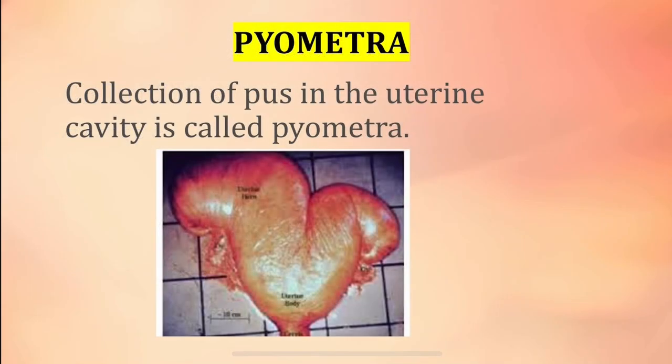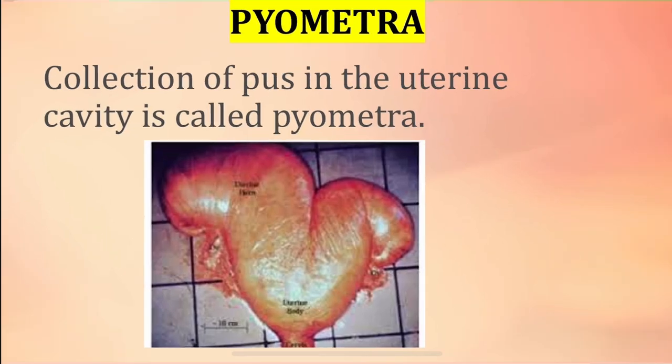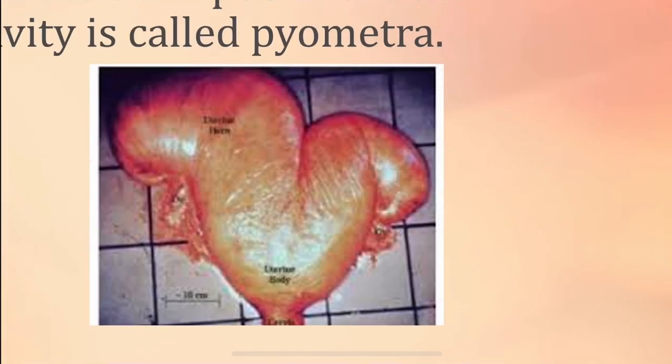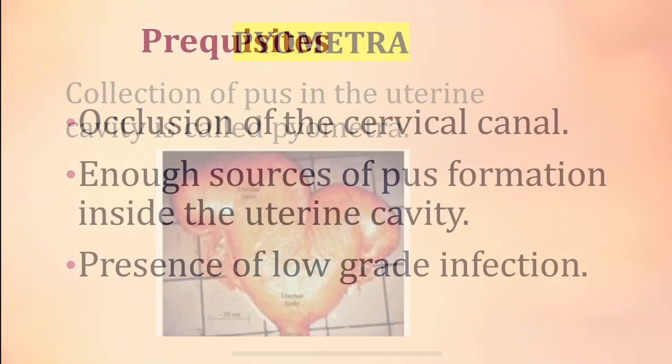What is pyometra? The collection of pus in the uterine cavity is pyometra. You can see the uterine cavity filled up with pus.